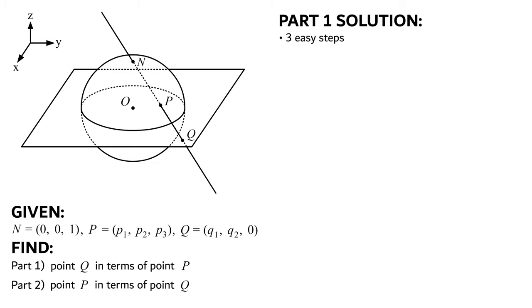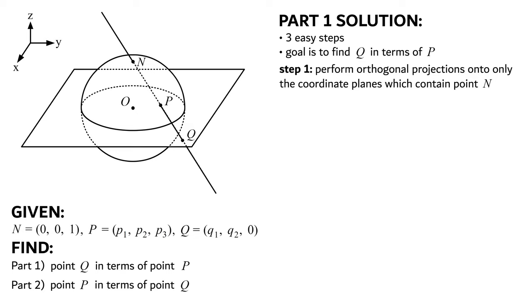I've broken up part 1 of this exercise into three easy steps. Remember that to project the point p, our goal is to find q in terms of p. Step 1 is to perform orthogonal projections of our diagram onto only the coordinate planes which contain point n. We're in R3, so there are three coordinate planes: the xy, xz, and yz planes. Our point n is held in the z-axis, so we must orthogonally project our diagram onto the xz and yz planes, because they are the ones that contain the z-axis, which ultimately holds the point n.